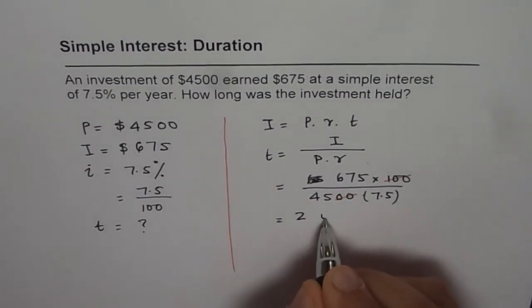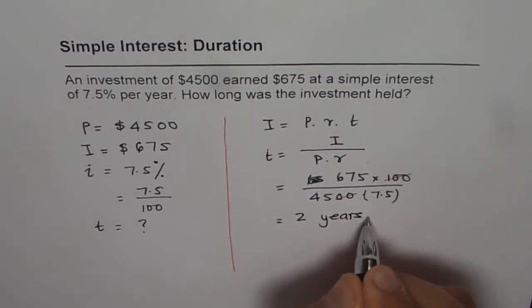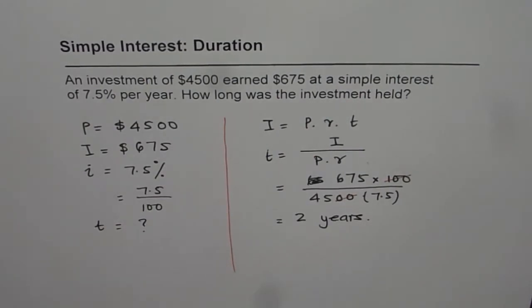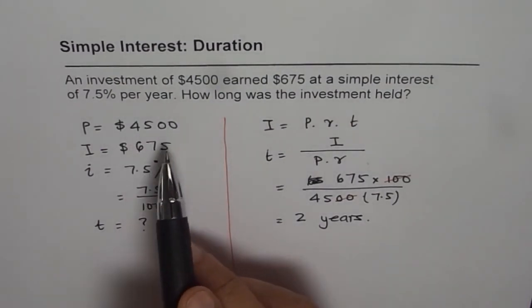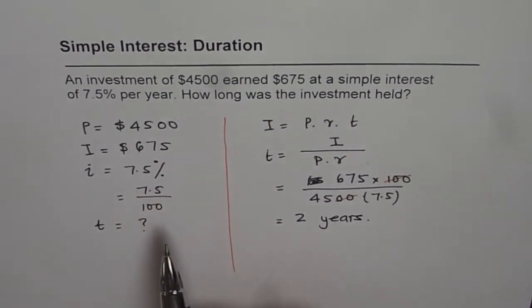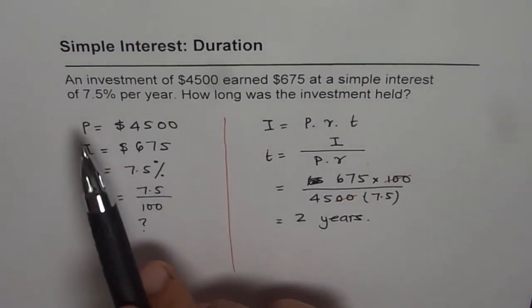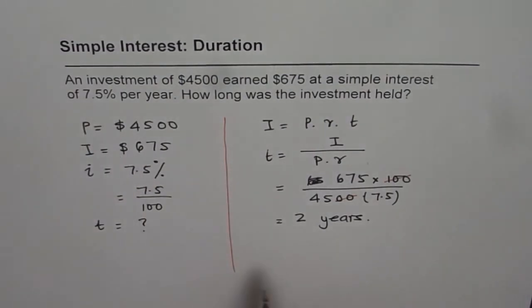So, the time is in years. It is 2 years. Time duration for earning 675 dollars with an investment of 4,500 dollars at a simple interest rate of 7.5 is 2 years.